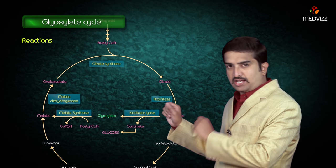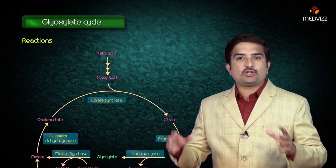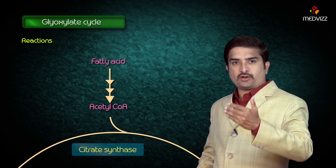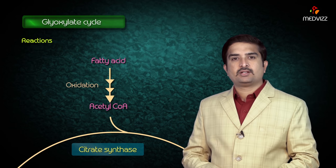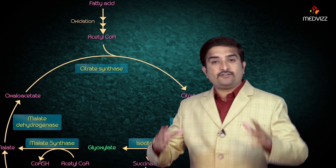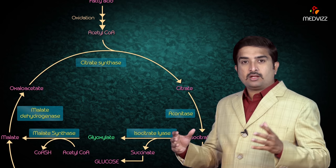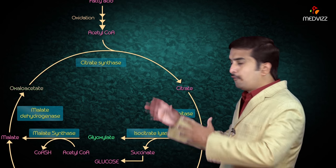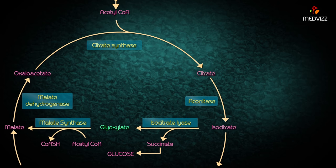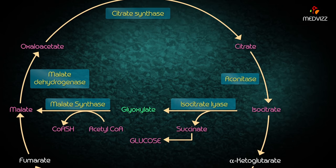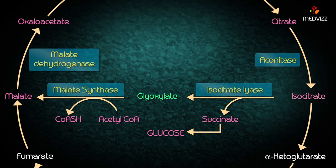Now let us talk about the reactions of the glyoxylate cycle. Acetyl coenzyme A is produced from the oxidation of fatty acids, and the condensation of this acetyl coenzyme A with oxaloacetate forms citrate. Citrate is then isomerized to isocitrate.